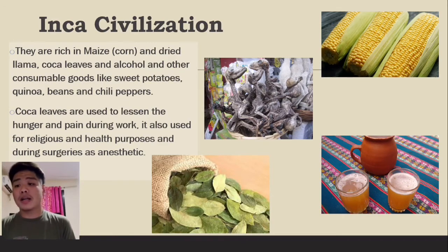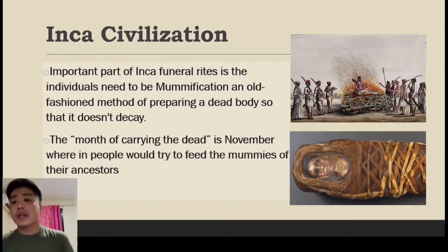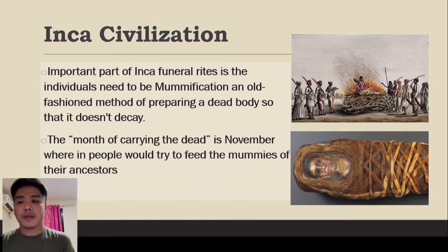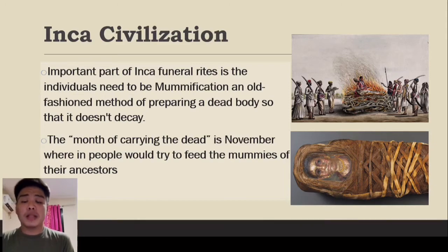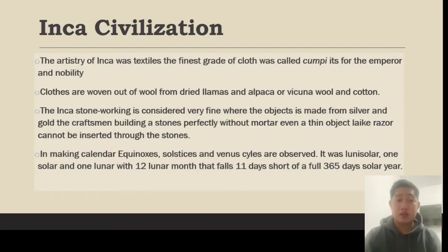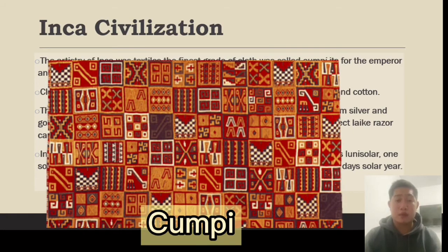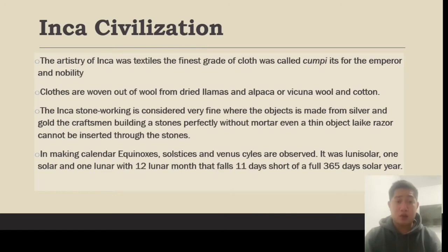The Inca were rich in maize or corn, dried llama meat, coca leaves, alcohol, and other consumable goods like sweet potatoes, quinoa, beans, and chili peppers. Coca leaves were used to lessen hunger and pain during work, and also for religious and health purposes, including as an anesthetic during surgeries. An important part of Incan funeral rites was mummification — an old-fashioned method of preserving a dead body. November was the month for carrying the dead, when people would try to feed the mummies of their ancestors.